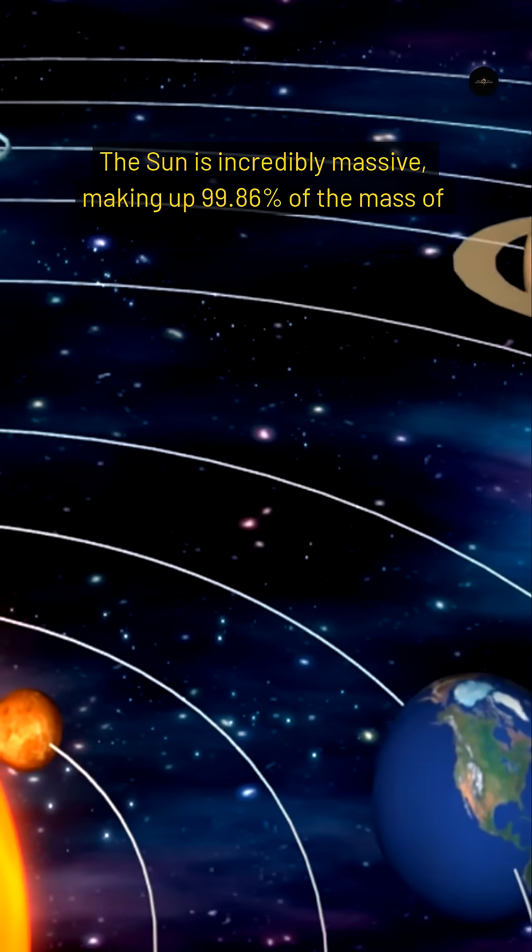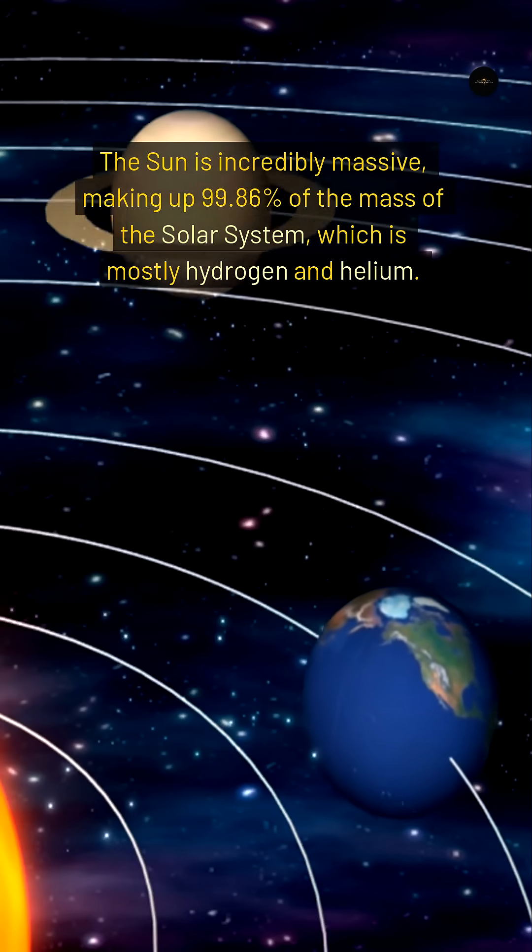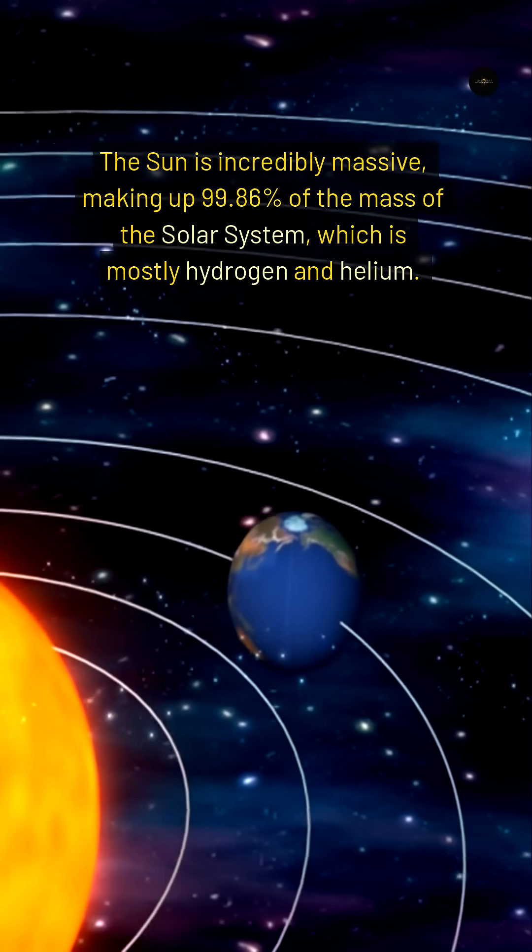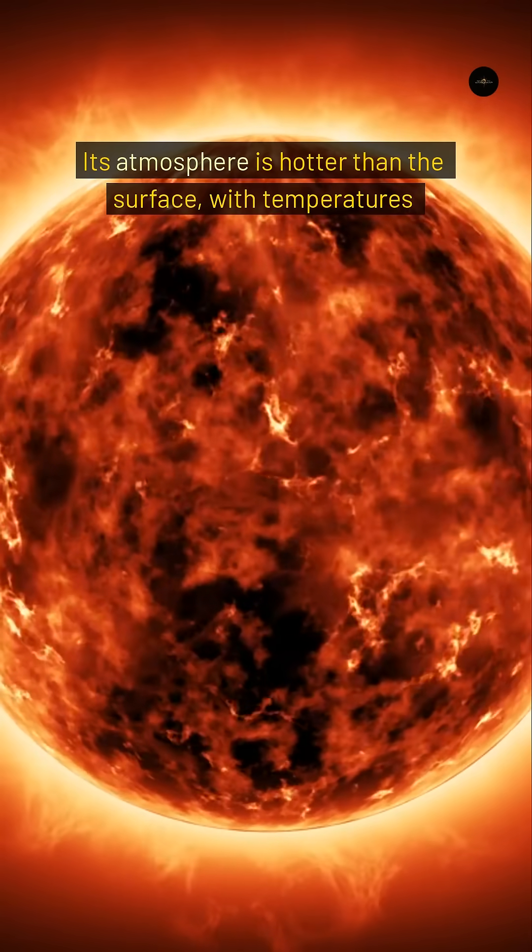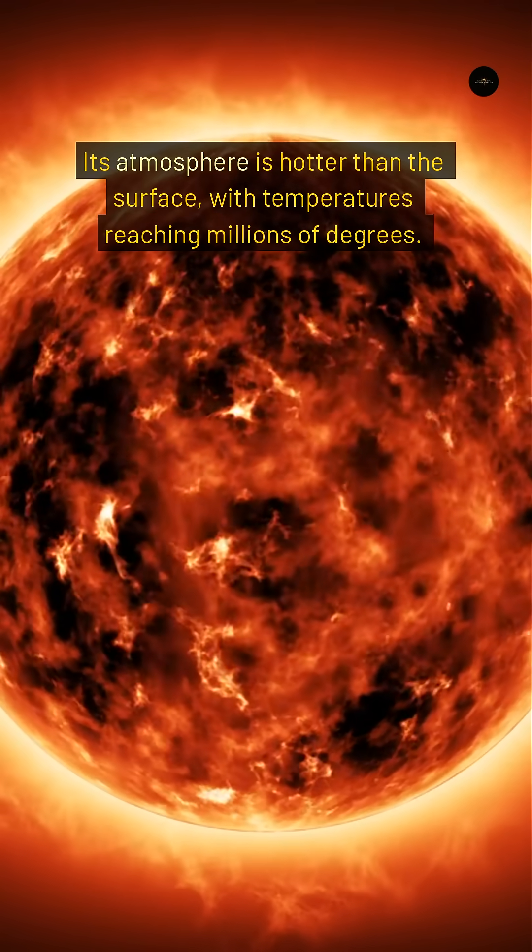The Sun is incredibly massive, making up 99.86% of the mass of the solar system, which is mostly hydrogen and helium. Its atmosphere is hotter than the surface, with temperatures reaching millions of degrees.